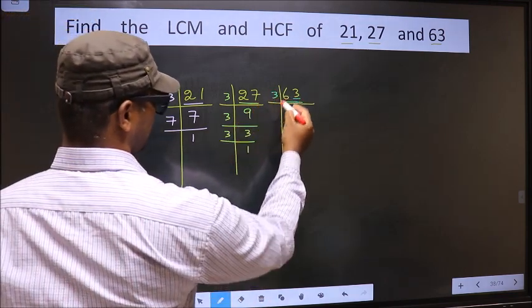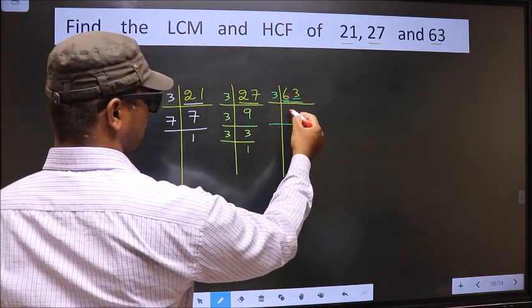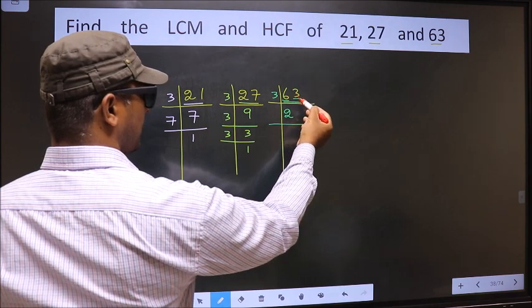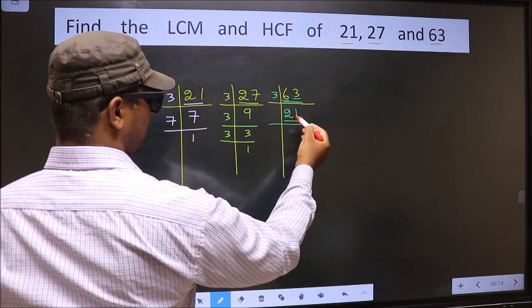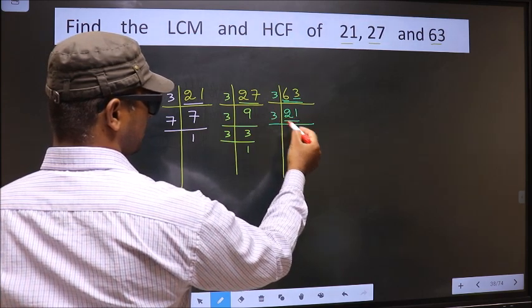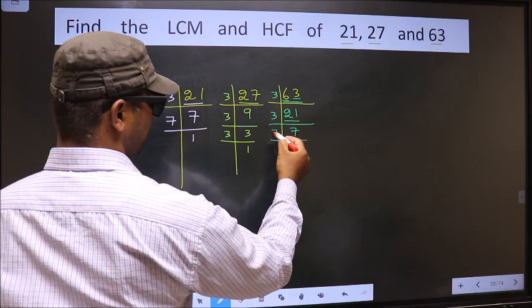So we take 3 here. The first number 6. When do we get 6 in 3 table? 3 times 2 equals 6. The other number 3. When do we get 3 in 3 table? 3 times 1 equals 3. Now here we have 21. 21 is 3 times 7 equals 21. Now we have 7. 7 is a prime number, so 7 times 1 equals 7.